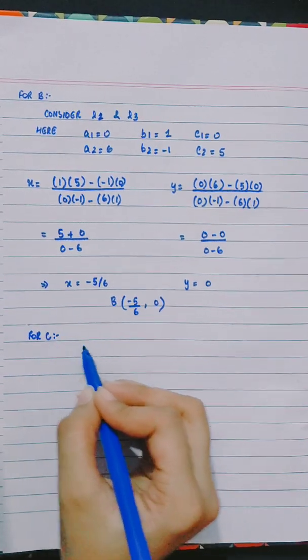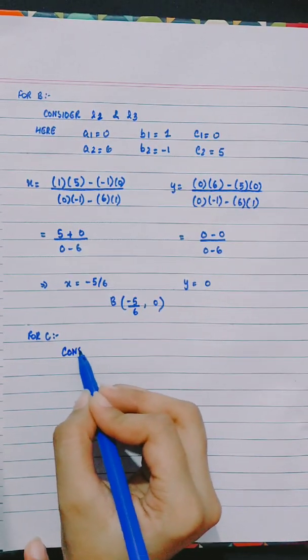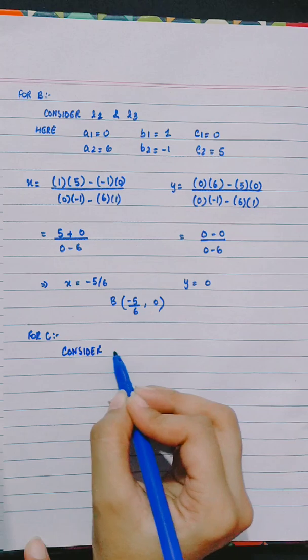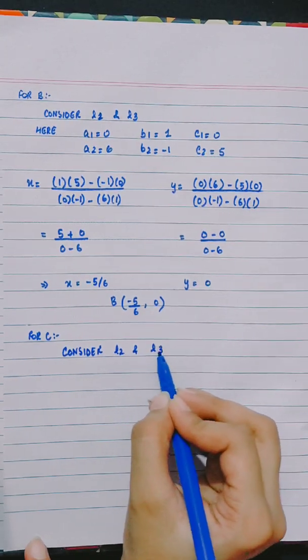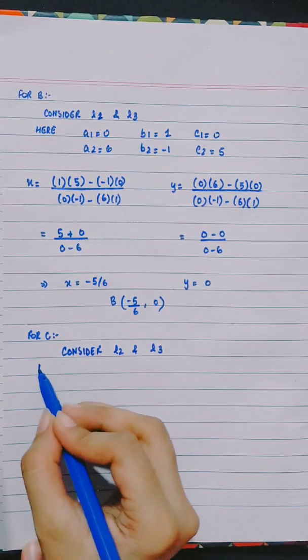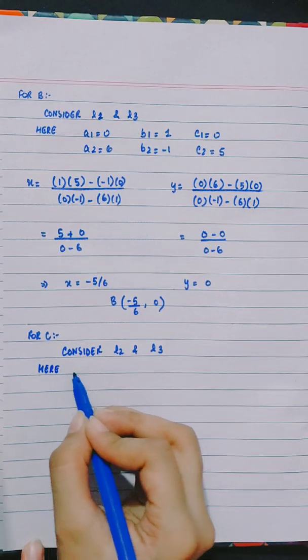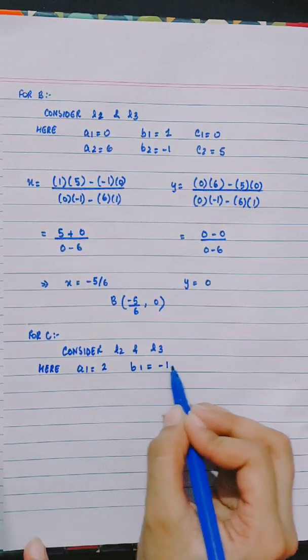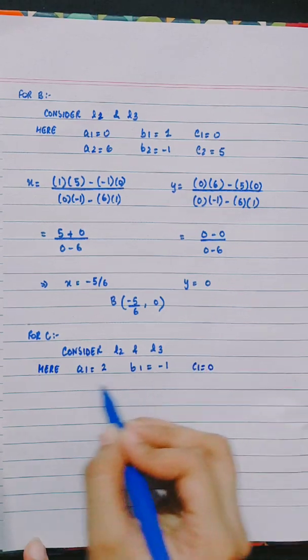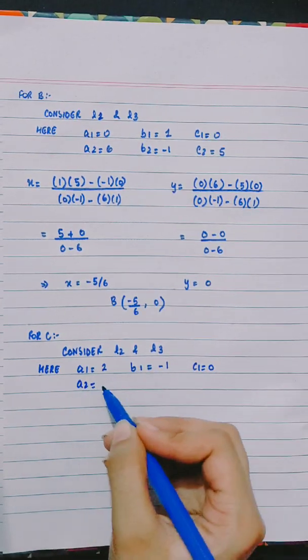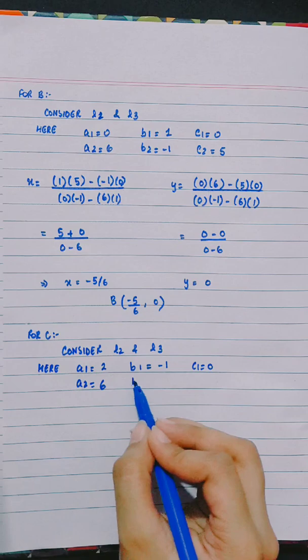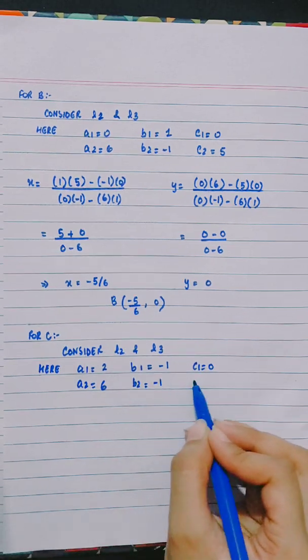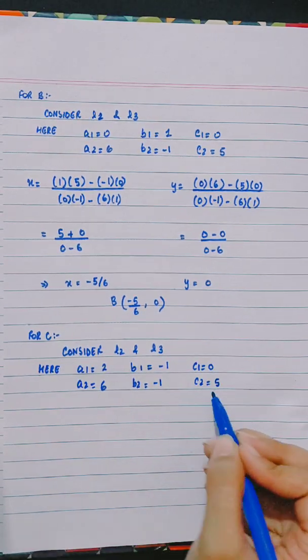For point C, consider L2 and L3. Here a1 is 2, b1 is minus 1, c1 is 0, a2 is 6, b2 is minus 1, and c2 is 5.